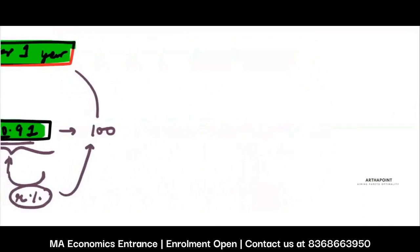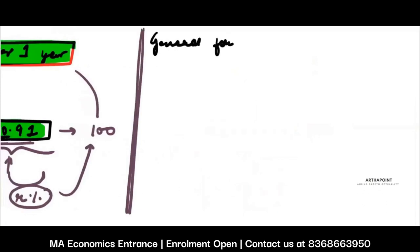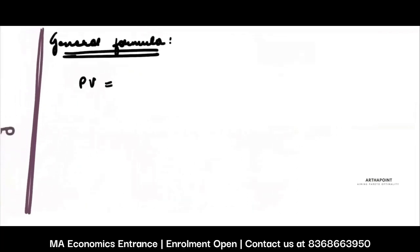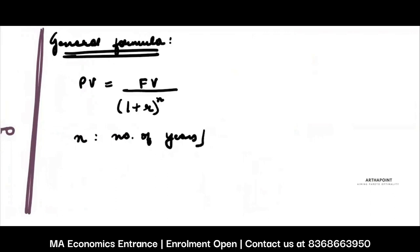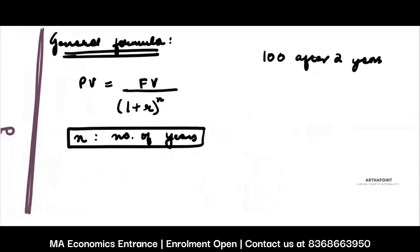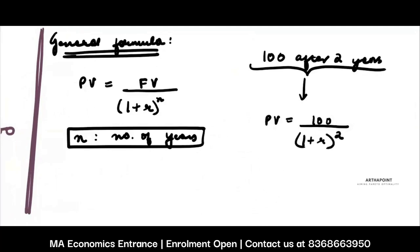Now had it been 100 after 2 years, how would you find the present value? The general formula for finding the present value is: Future Value divided by (1 + R) to the power N, where N is the number of years after which you are getting that money. So if I tell you that I am getting 100 after 2 years and ask what its present value is, you will say: Present Value = 100 / (1 + R)^2. And if the interest rate is 10%, then Present Value = 100 / (1.1)^2.